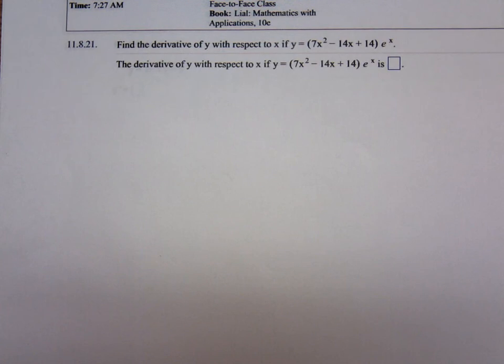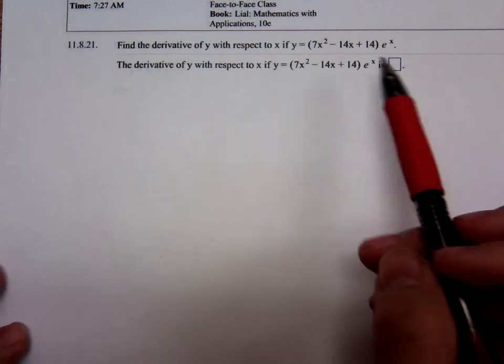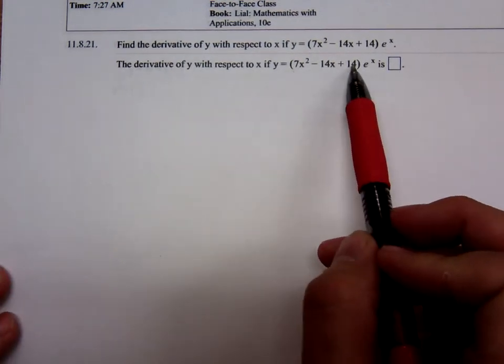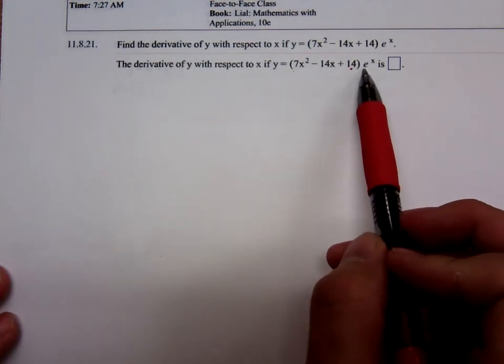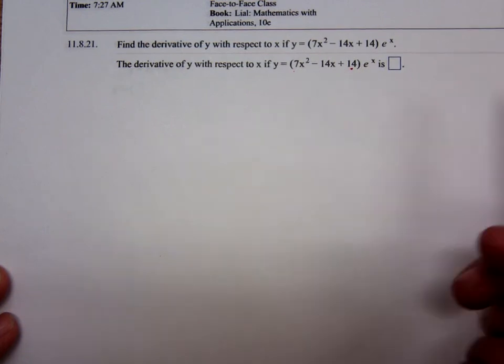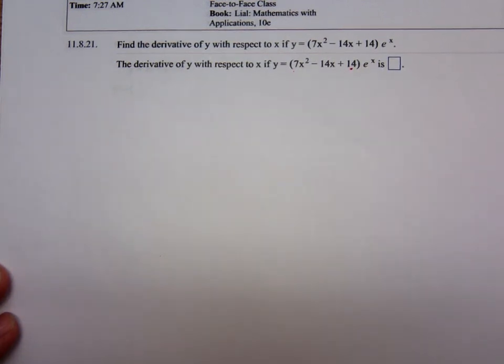I'm Timothy Priscilla and today we're going to differentiate an exponential function. In this case we have a trinomial times e to the x. This is a product: 7x squared minus 14x plus 14 times e to the x.